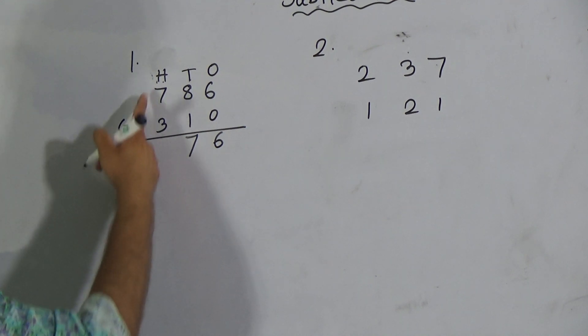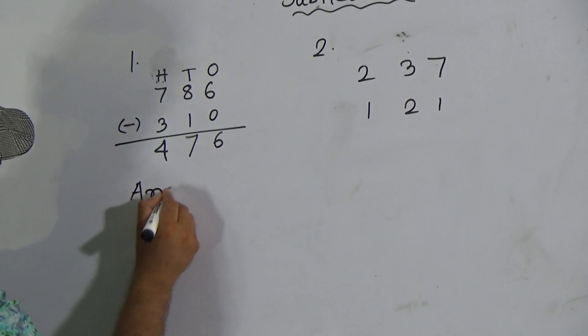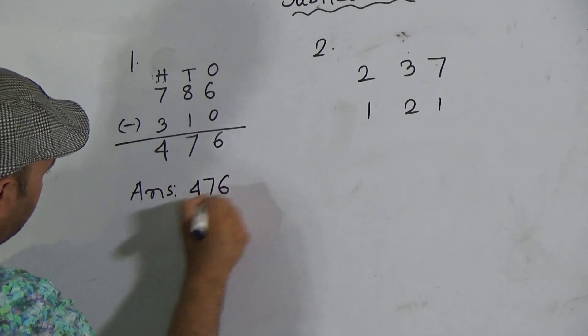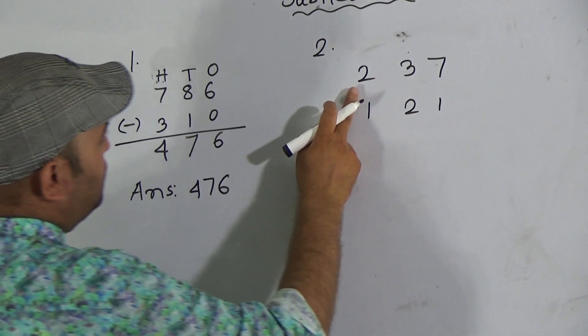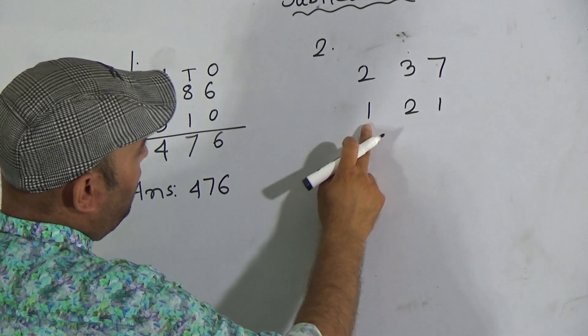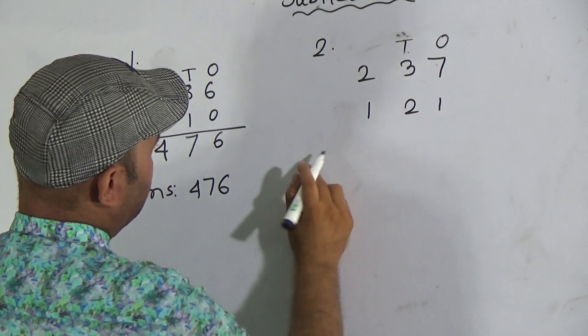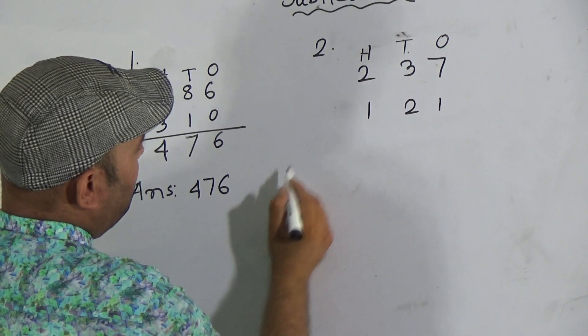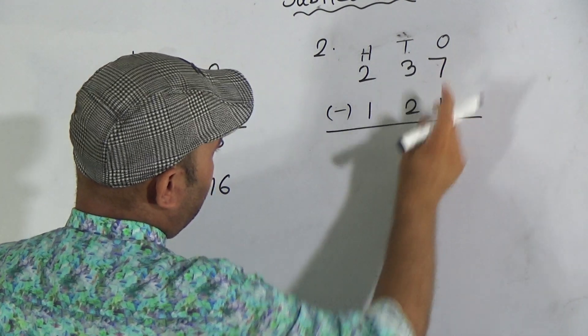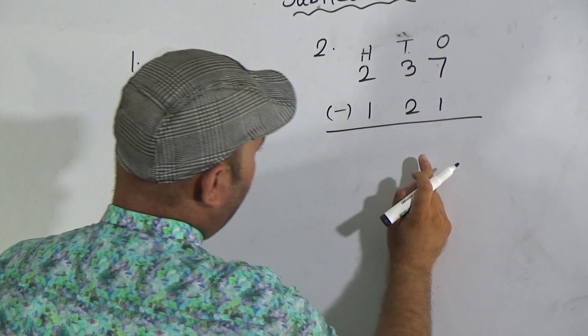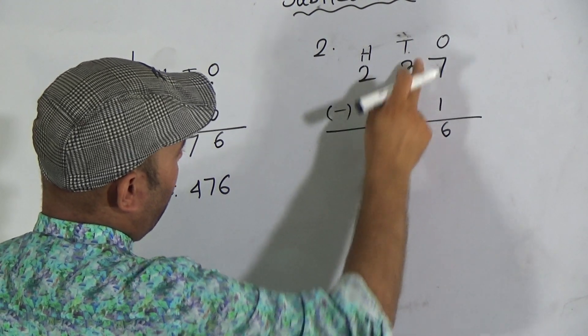Next column is hundreds place digit, 3 and 7. 3 from 7 is 4. So the answer is 476. Hope you understood this one. Now look here, question number 2: 237 and 121. 7 and 1 are ones place digits, 3 and 2 are tens place digits, 2 and 1 are hundreds place digits. Keep a minus sign here and draw a line. Start from ones place: 1 from 7 is 6. Next column tens place: 2 from 3 is 1. 1 from 2 is 1. So the correct answer is 116.